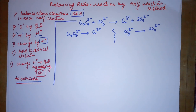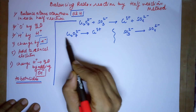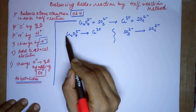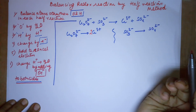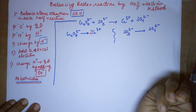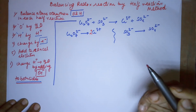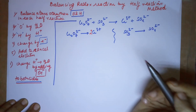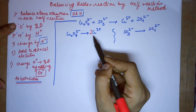Step one: ignore hydrogen and oxygen and balance the other atoms. Other than oxygen, we have only chromium. There are two chromiums in dichromate, so you need to place a coefficient of 2 before Cr³⁺. This is a common error I've always observed in students' balancing work.